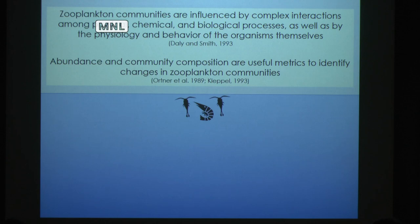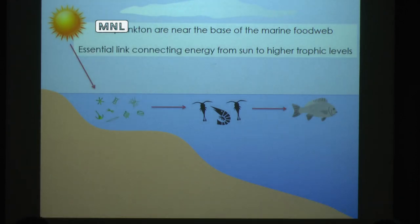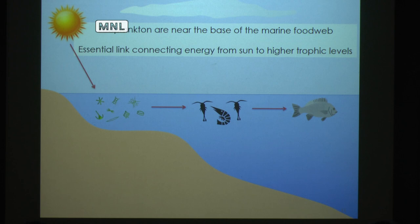Some important metrics for understanding these communities are measuring their abundance as well as community composition, to understand changes in the communities as they relate to the environment. They serve as a really important link connecting energy captured from the sun through photosynthesis by phytoplankton and bringing that energy to higher trophic levels, so they're really important for sustaining marine fisheries.